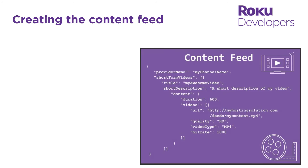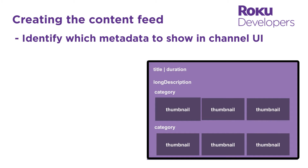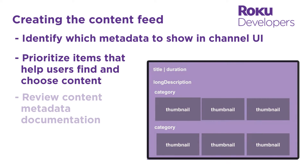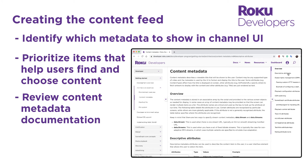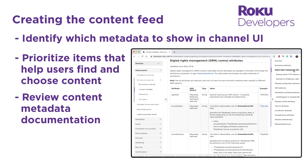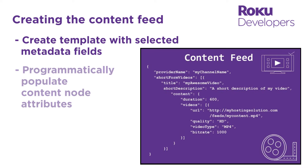To create the content feed, you first want to determine which metadata items you want to surface to users. Consider which items are most important for users to find and select content in your channel. You can also review the content metadata documentation for the descriptive, playback, and DRM fields you might want to include. Use your analysis to create a template with the selected metadata fields. You can then programmatically populate the metadata fields of the content node with the data from your content catalog.